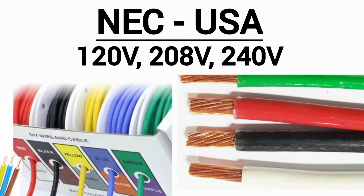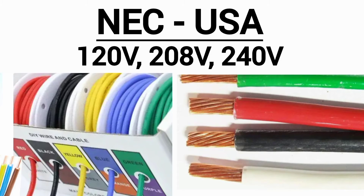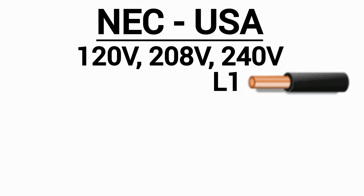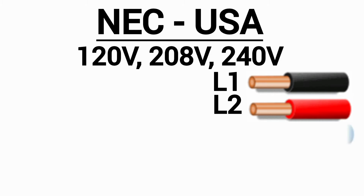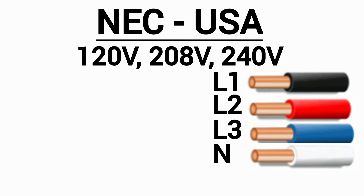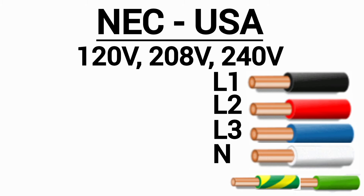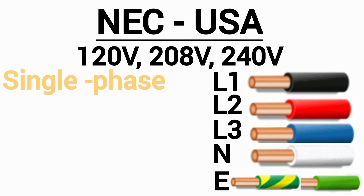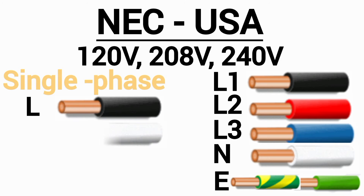Alright, so now let's look at the wire color codes used in the USA, which follow the NEC guidelines. The NEC does not actually mandate specific colors for hot or live wires — it only specifies the colors for neutral and ground. But in practice, for voltages of 120V, 208V, and 240V, black is commonly used for L1, red for L2, blue for L3, white for neutral, and either green or green with yellow stripes for earth or ground.